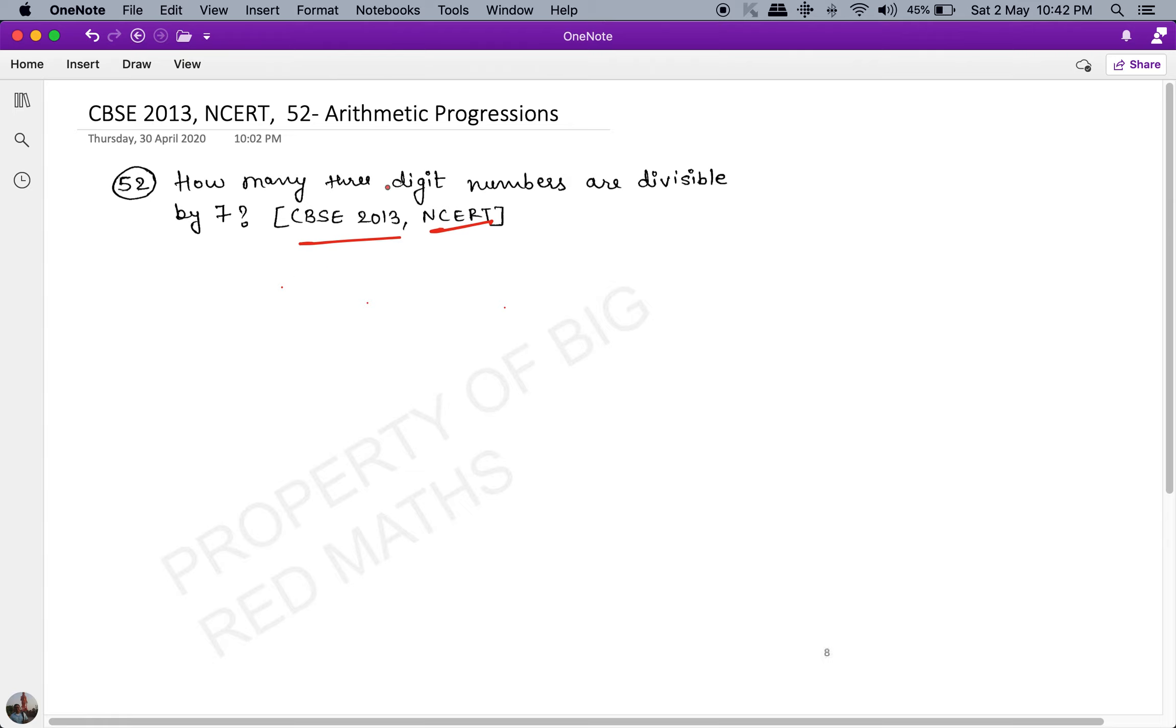To learn and know, let's start solving this one. The link to the previous 51 questions or the entire playlist is in the description for your reference. The question is: How many three-digit numbers are divisible by seven?